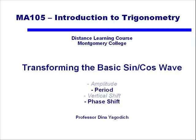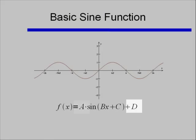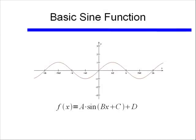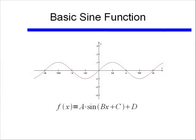In this video we're going to continue transforming our basic sine and cosine wave, focusing on transforming the period and the phase shift of our function. We have f(x) = a·sin(bx + c) + d. We've already talked about how 'a' affects the amplitude and how 'd' affects the vertical shift. Now we're going to talk about 'b' and 'c', which are going to affect the function horizontally instead of vertically.